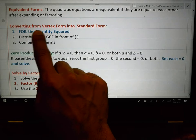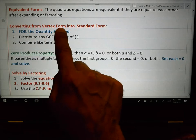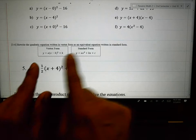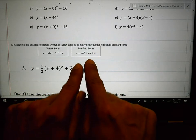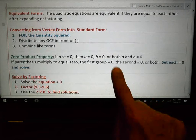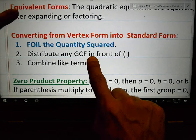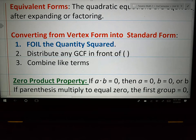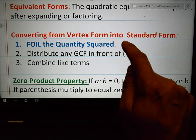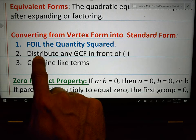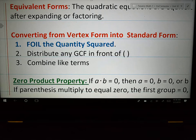Second thing that we're going to do is we're going to convert from vertex form into standard form. We're going to take things that are like this and put it into that form. There's a way to do it. How do we do it? We're going to follow these three steps. We're going to foil. After we foil, we're going to leave things in brackets and then we're going to distribute any GCF in front of those parentheses and we'll combine like terms.